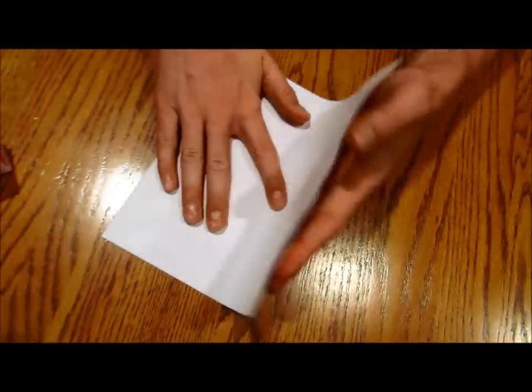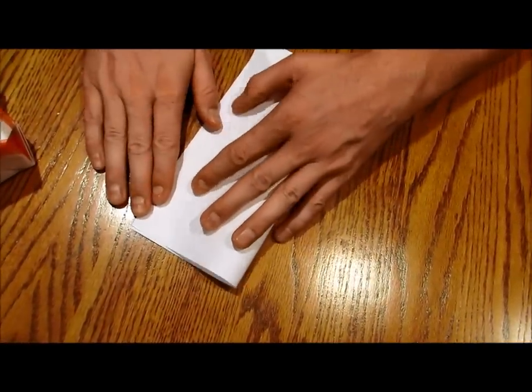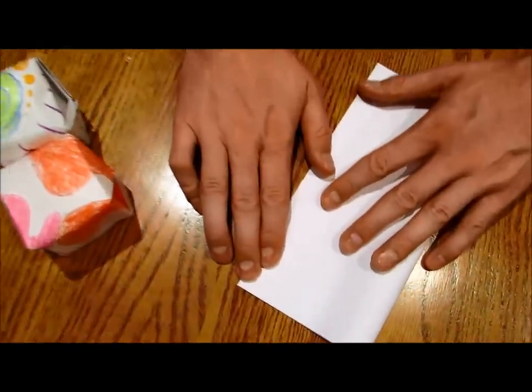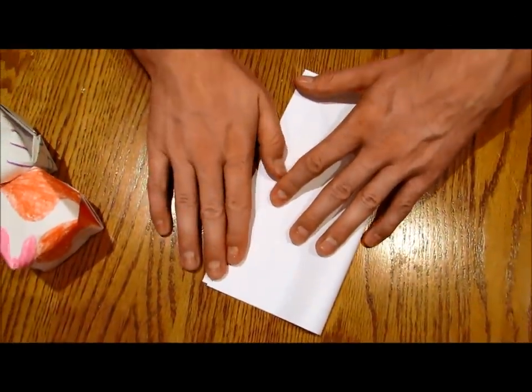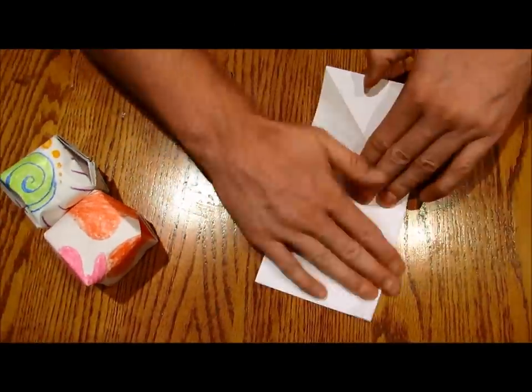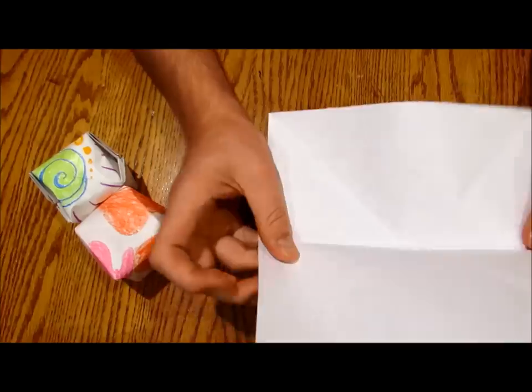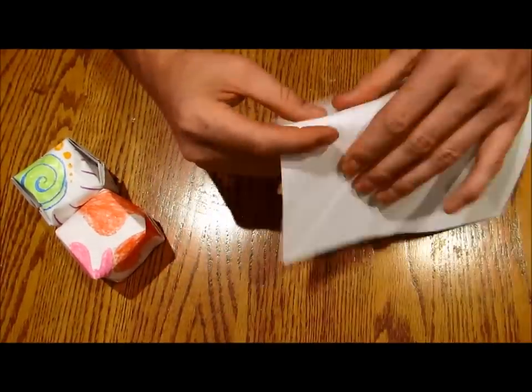The next thing to do is just fold it in half the long way so you want both the corners on both ends to line up just right. And then just fold it over the other way because we actually want it to bend in.